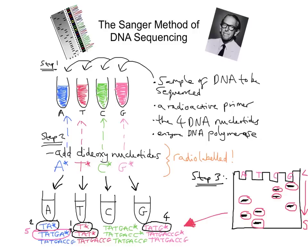So these are the three simple steps to the Sanger method of DNA sequencing. We take four tubes labelled A, T, C, and G, each containing our DNA sample, the four DNA nucleotides, enzyme DNA polymerase, and a radioactive primer for visualisation. We then add dideoxynucleotides — A*, T*, C*, and G* — which, when added onto the DNA strand, halt DNA synthesis and terminate the chain sequence. Then through gel electrophoresis, we read that DNA sequence by running the contents of the four tubes side by side and examining the individual fragments.